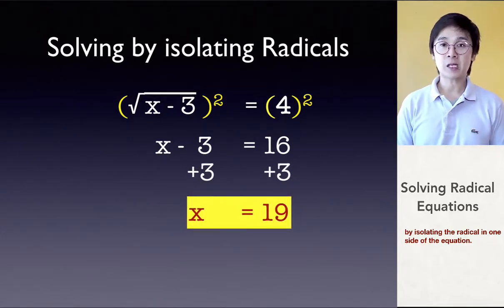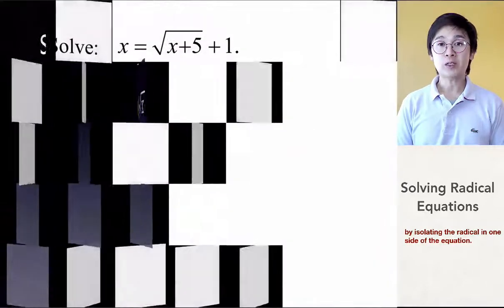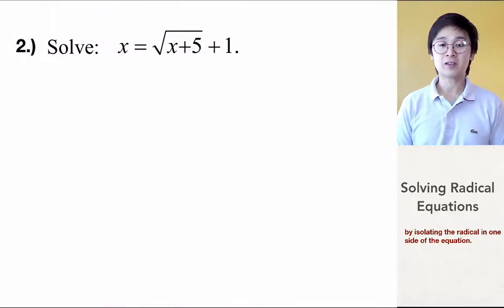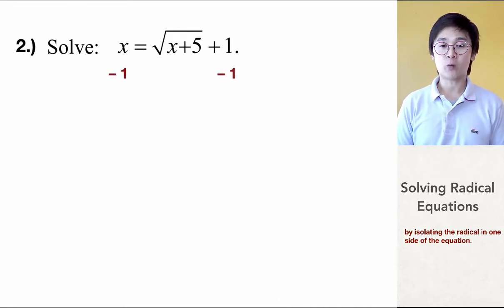So, these are some of the types of radical equations that you need to watch out for. Now, for the second group of examples, you will notice that we have variables on both sides. And you also notice that the square root of x plus 5 is not by itself. So, just like what we did on the first few examples, we're going to isolate square root of x plus 5 by getting rid of the constant — in this case, subtracting 1 on both sides — leaving us with x minus 1 equal to square root of x plus 5.